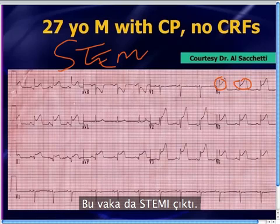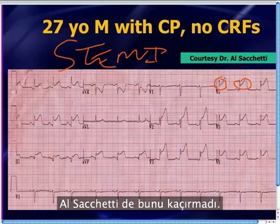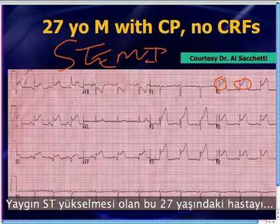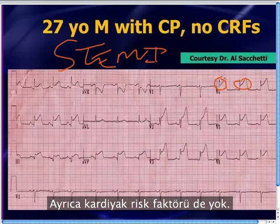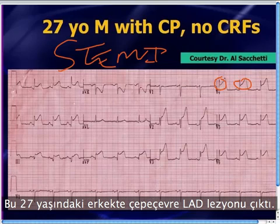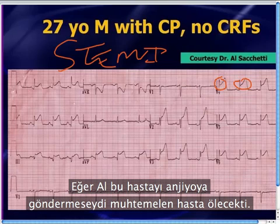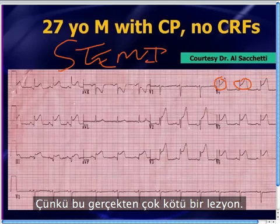And that's exactly what this turned out to be. Al Cicchetti did not miss this. He sent this patient up to the cath lab — this 27-year-old with diffuse ST segment elevation, no reciprocal changes, and no cardiac risk factors. The patient had a wraparound LAD lesion, and had Al not sent him to the cath lab, this guy probably would have died. That's a really bad lesion to have.